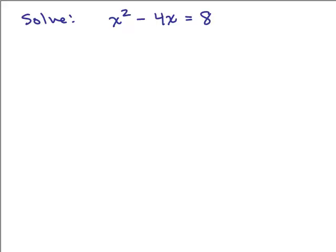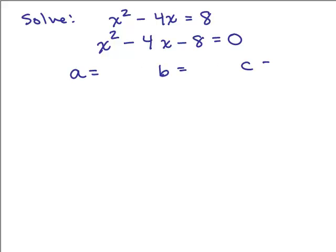Here's our next example. We're going to solve by using the quadratic formula. The first step is to set the equation equal to 0: x squared minus 4x minus 8 equals 0. Then we identify a, b, and c. The coefficient of x squared is 1, the coefficient of x is negative 4, and the constant is negative 8.